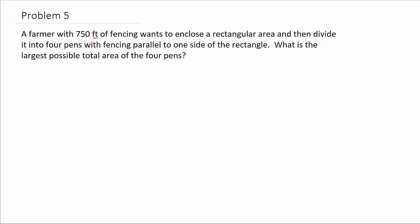Alright, so it says a farmer with 750 feet of fencing wants to enclose a rectangular area and then divide it into four pens with fencing parallel to one side of the rectangle. What is the largest possible total area of the four pens?